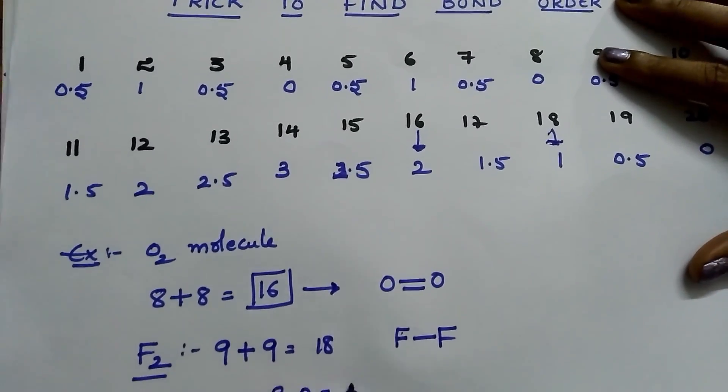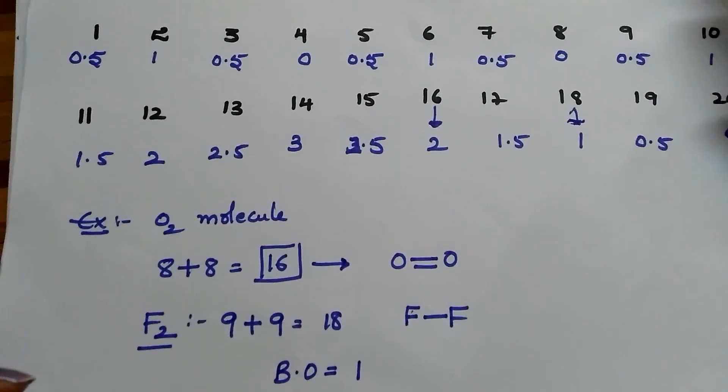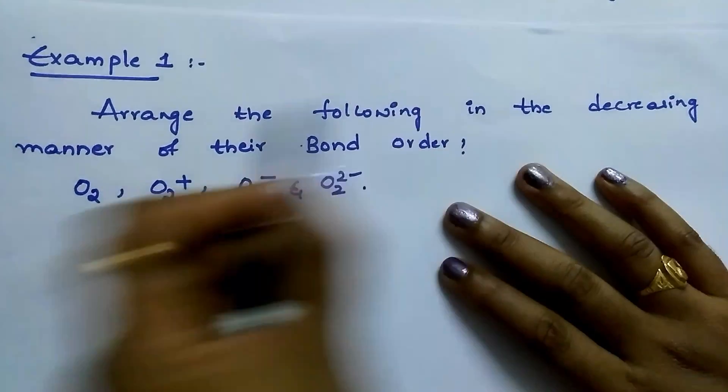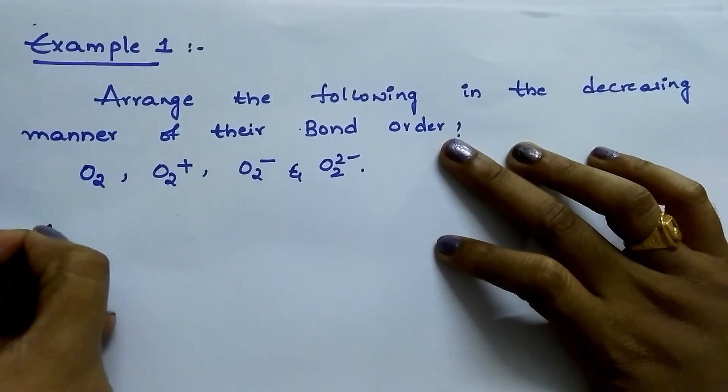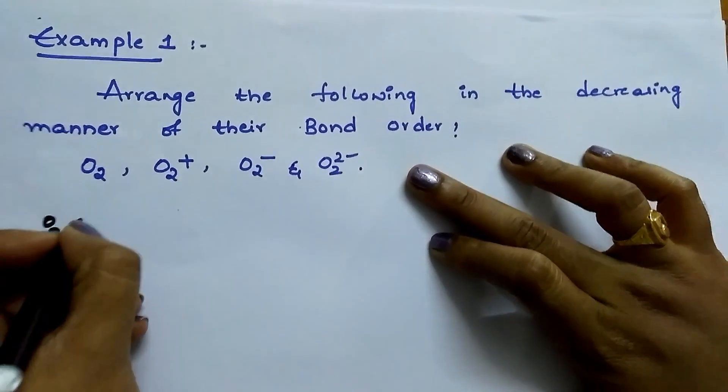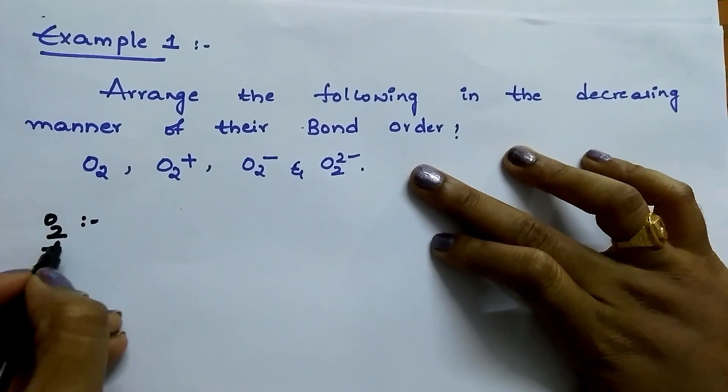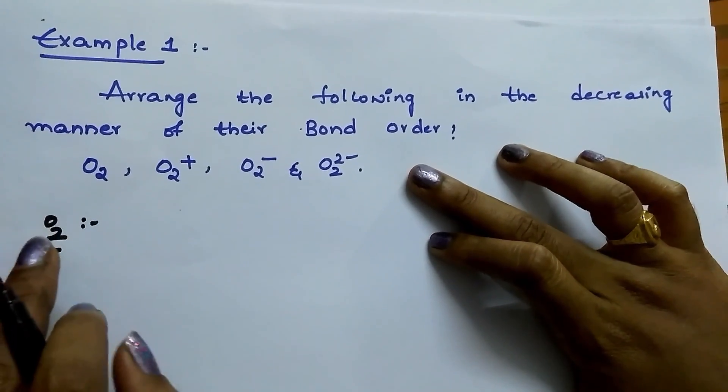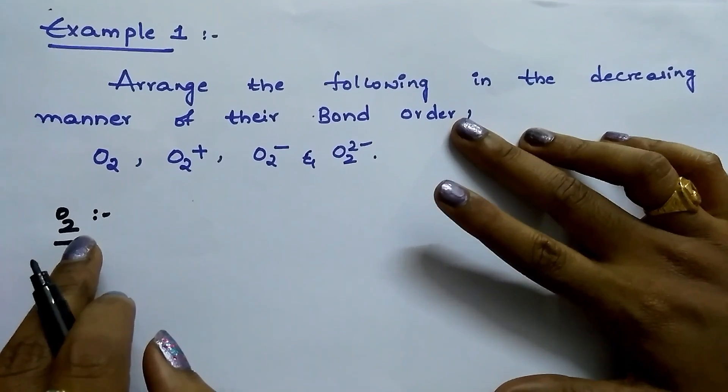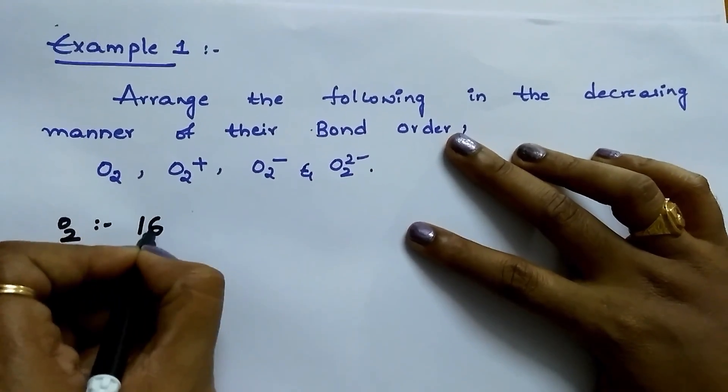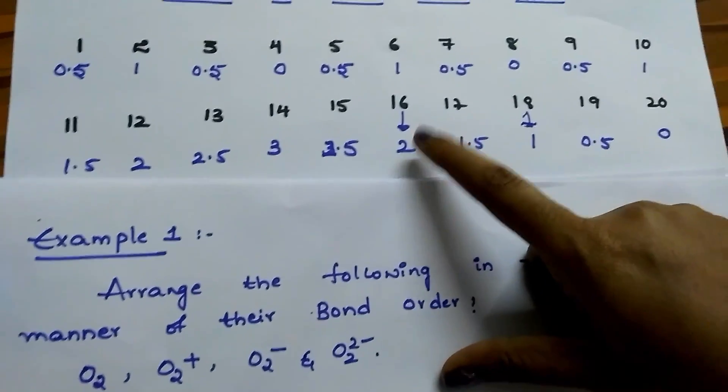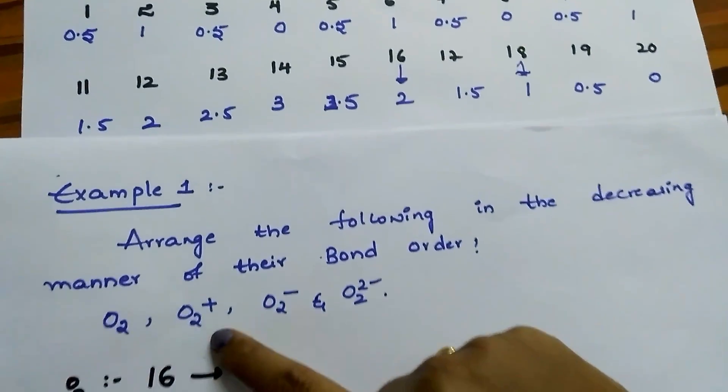By using this trick, let us solve a problem. Example 2: Arrange the following in the decreasing manner of their bond order: O2, O2+, O2-, and O2(2-). First find for O2. For O2, each oxygen atomic number is 8. Two oxygens are there, so 8 plus 8 equals 16. See this chart: under 16, 2 is there, means its bond order is 2.